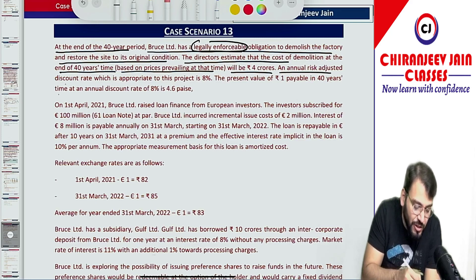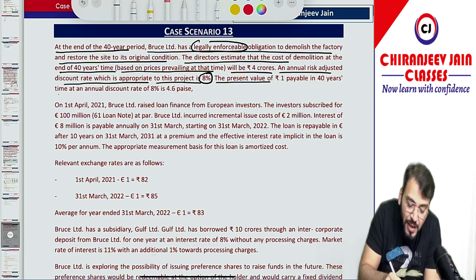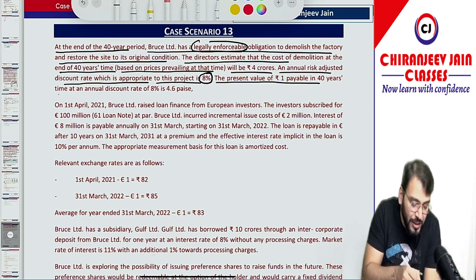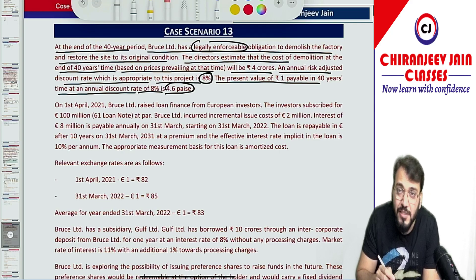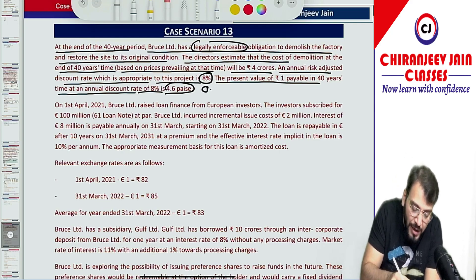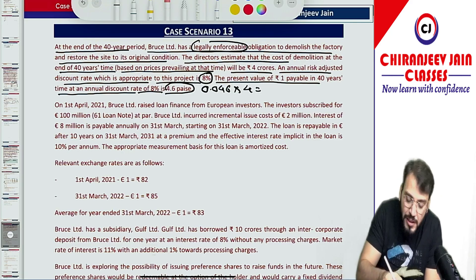An annual risk-adjusted discount rate appropriate to this project is 8%. The present value of rupee 1 payable in 40 years at an annual discount rate of 8% is 4.6 paise. You need to convert paise into rupees — it will be 0.046 multiplied by 4 crore. So 4 into 0.046 is equal to 0.184 crore.